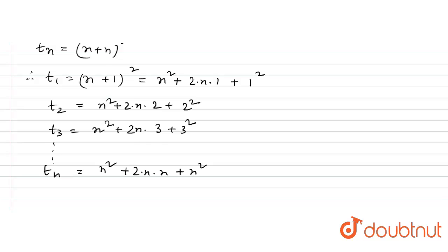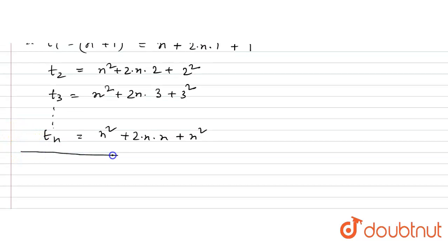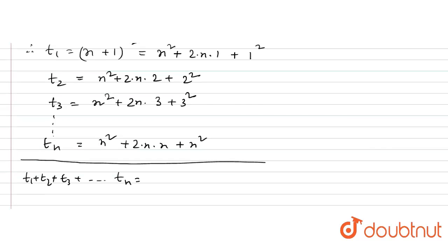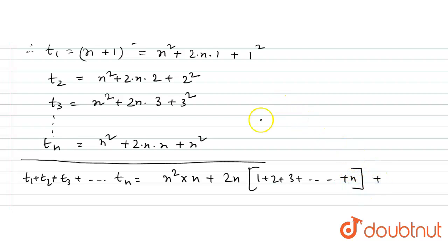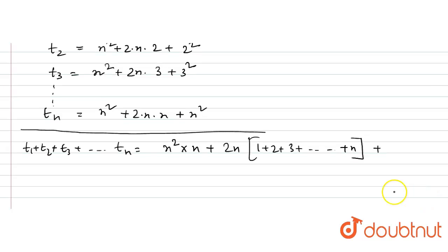Now let's see what we did. We sum t_1 + t_2 + t_3 + ... + t_n. That equals the sum of the first term n² repeated n times, plus the sum of middle terms, plus the sum of 1² + 2² + 3² + ... + n².